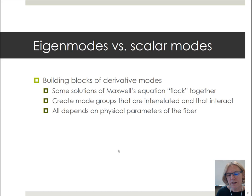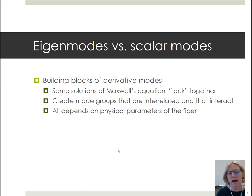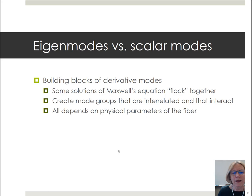The difference between eigenmodes and scalar modes: eigenmodes are the fundamental solutions to Maxwell's equations — the building blocks. Under the weakly guiding approximation (where core and cladding refractive indices differ by only ~1–2%), Maxwell's equations simplify to scalar solutions. Some eigenmodes behave similarly — they 'flock together' — forming mode groups that are interrelated and interact heavily. This grouping behavior depends on the physical parameters of the fiber.